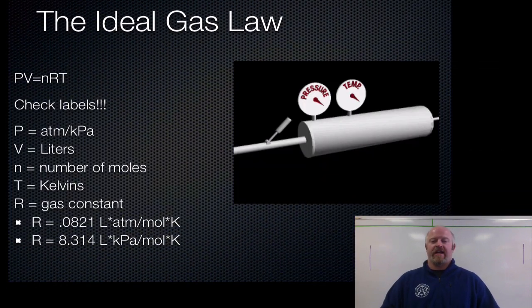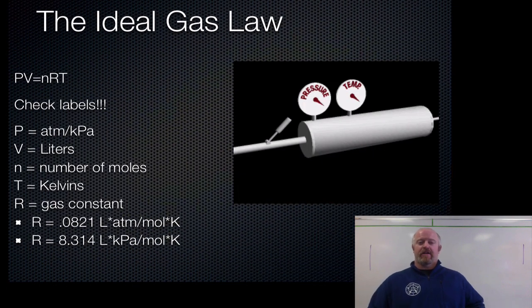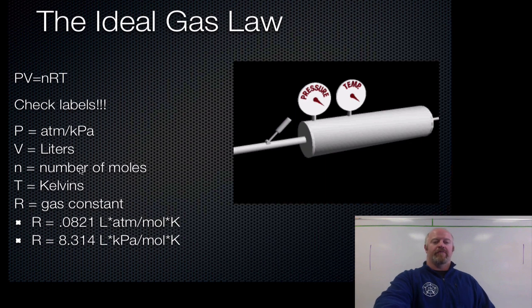Which leads us into our ideal gas law. Now, the ideal gas law, if we put it all together, we call it PV equals NRT. All we've done is move T over here in that relationship to get a single line equation, basically. So nothing is being divided here. You'll hear chemists refer to this as Pivnert in terms of the ideal gas law. Pressure, volume, N stands for number of moles, R is a gas constant, and T is temperature in Kelvins.